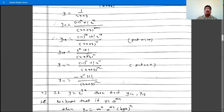And minus 1 raised to 10: since 10 is even, minus 1 raised to an even power is plus 1. So y10 is plus 1 times 2 raised to 10 times 10 factorial, divided by 2x plus 3 raised to 11.